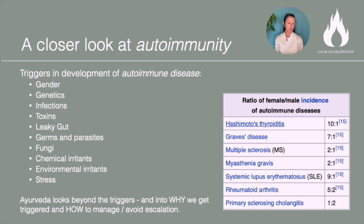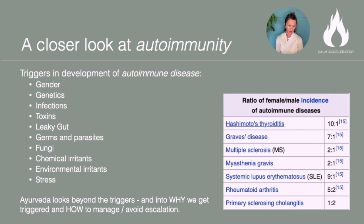There are triggers that have been implicated in the development of autoimmune disease. One is gender — females are more likely in general to develop autoimmune disease than males. You can see in the chart on the right-hand side a 10-to-1 ratio for Hashimoto's, for example — 10 women versus one man. Graves' disease is 7-to-1. Basically all diseases in this chart show at least a two-times likelihood of women developing it versus men, if not more in some cases.